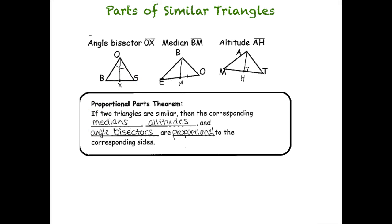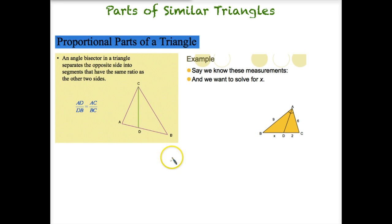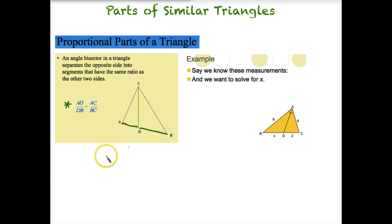Let's look at a couple of examples. First, the angle bisector. It separates the opposite side into segments that have the same ratio as the other two sides. So if we take AD over DB — those two parts — they should be in the same ratio as the other sides. That is equal to AC in this triangle compared to CB in this triangle. We have two similar triangles, so we're able to make this statement because we have proportional parts.